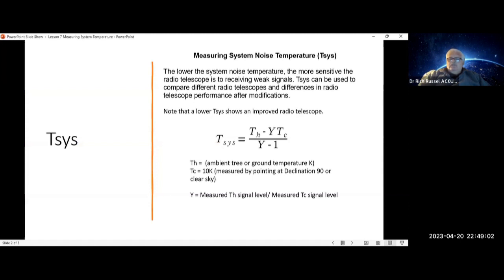T-Cold is the measurement of clear sky temperature. One measurement used at Goldstone Peeler Stockert is to point at declination 90 and assume T-Cold is equal to 10 degrees Kelvin.